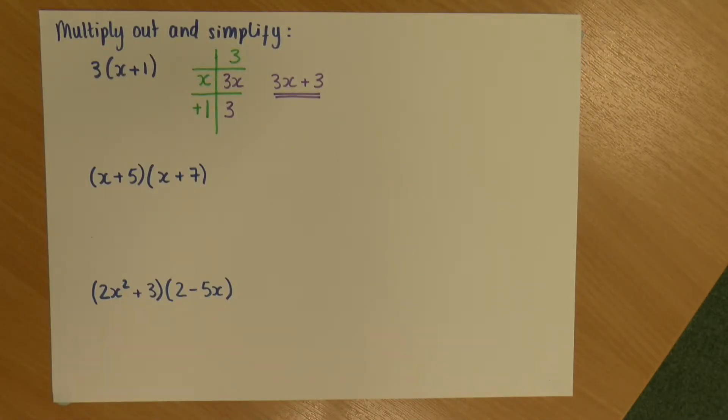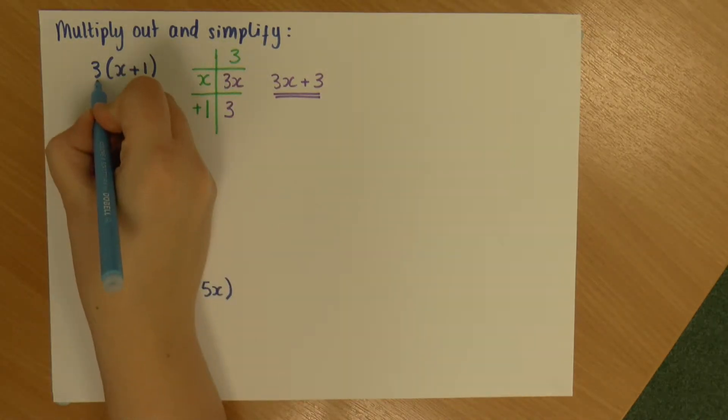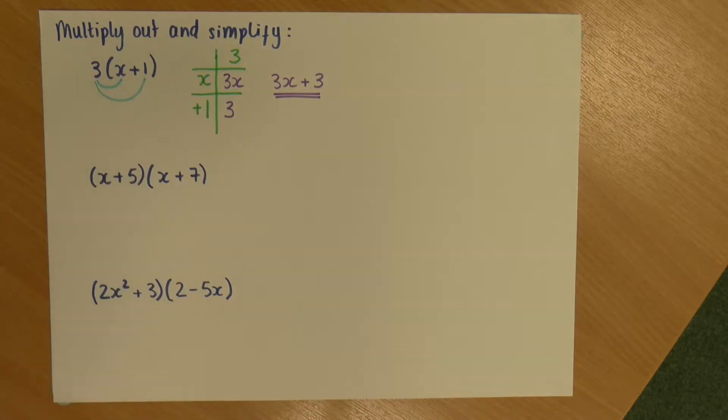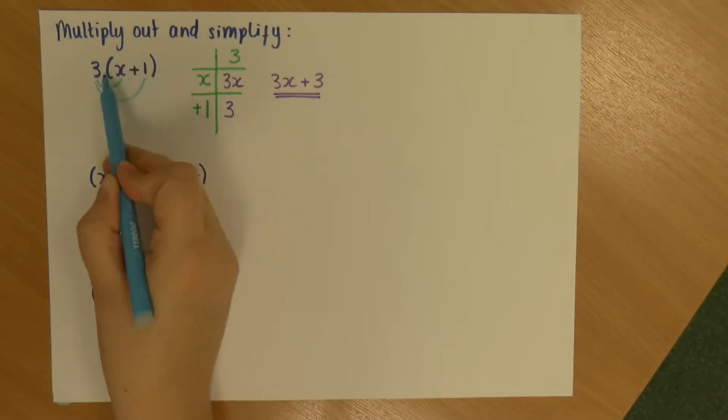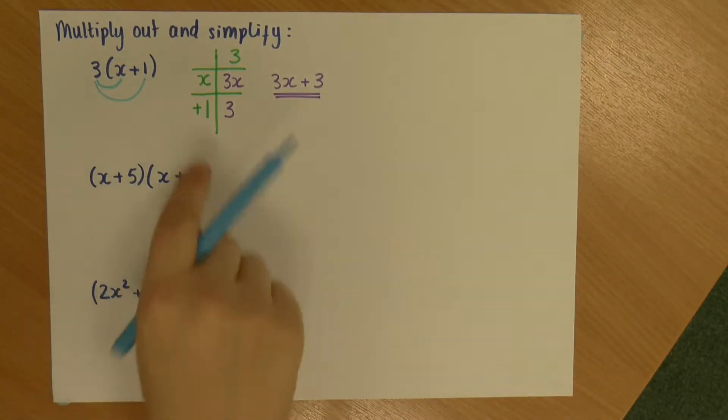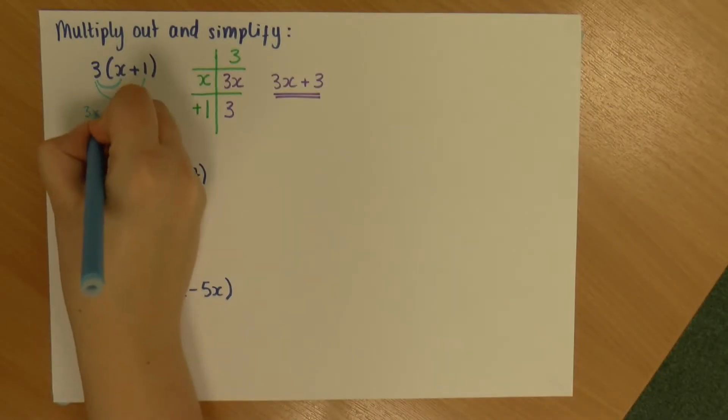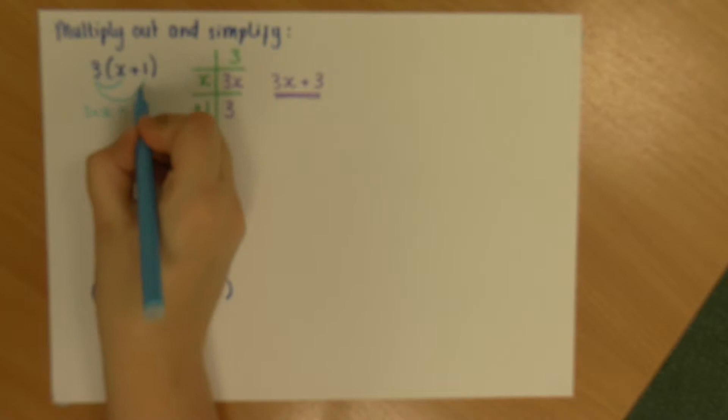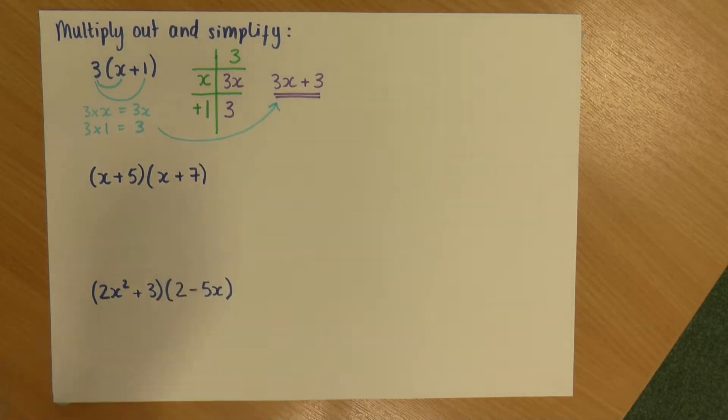Now, another way of thinking about it is something I call the smiley face method. Which is where we draw lines between each term. And we use that instead. So, I'll show you. So, I'll draw a line there. And I'll draw a line there. So, I've joined up each term. I don't want to join up the two things inside the brackets, though. So, it's each term inside the bracket with what's outside. And these are just doing essentially what these boxes are. So, this first line is telling me to do 3 times x.